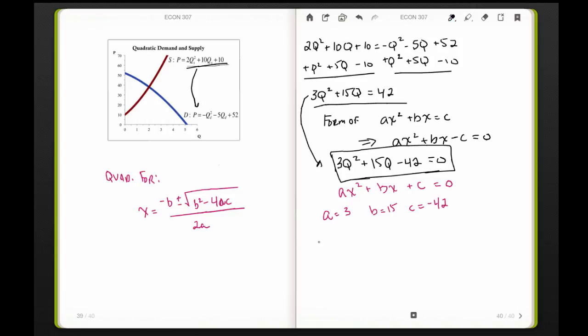So I've got x = -15 ± √(b²), which is 15² which is 225, minus 4ac. Let me write this out: this becomes minus negative 504. 4 times a is 12 times -42 is -504. Then we divide by 2a, which is 6. I can simplify further. This becomes -15 ± √729 divided by 6. This is a positive number, so I should get two solutions.